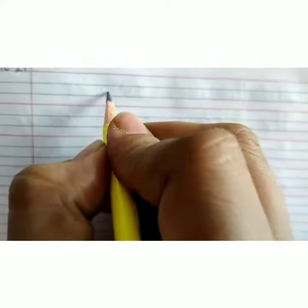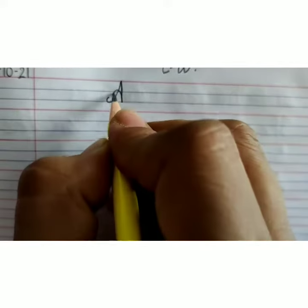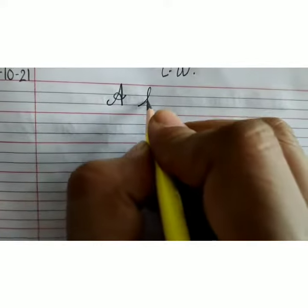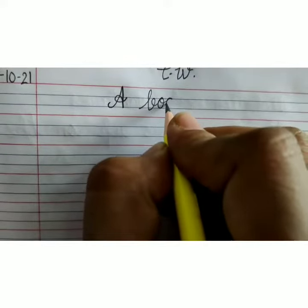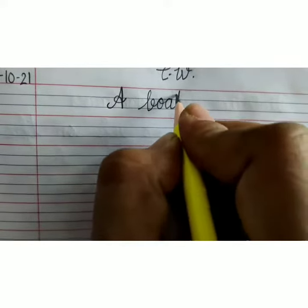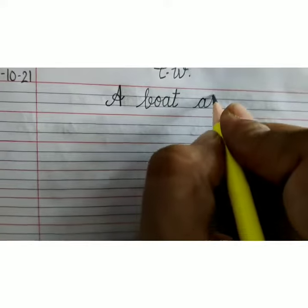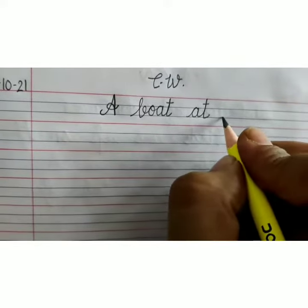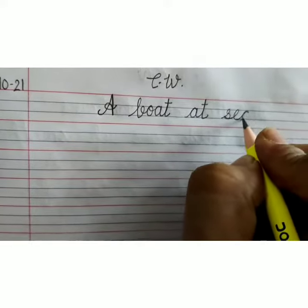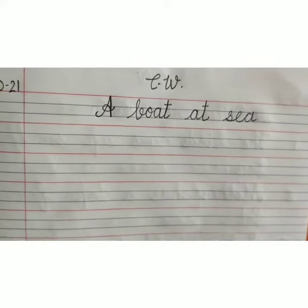Now we will write down heading: capital A, one finger space, B-O-A-T boat, space, A-T at, space, S-E-A sea. A boat at sea.